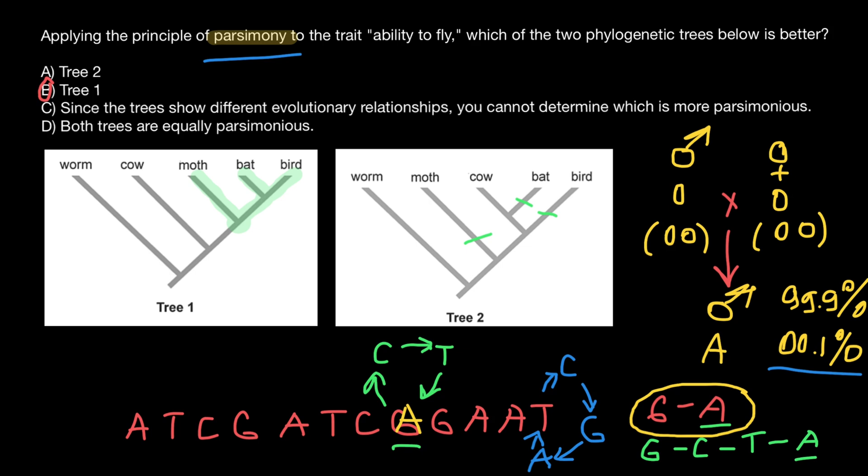So this phylogenetic tree is going to be more parsimonious than this one. Though, as I said, this phylogenetic tree is going to be the correct one. But our answer is that phylogenetic tree number one is more parsimonious. This is exactly the question: which phylogenetic tree is more parsimonious? Answer B. Again, this is a tricky question. That's all for today. Subscribe and see you in the next video. Goodbye.